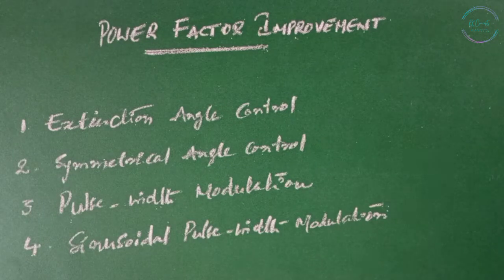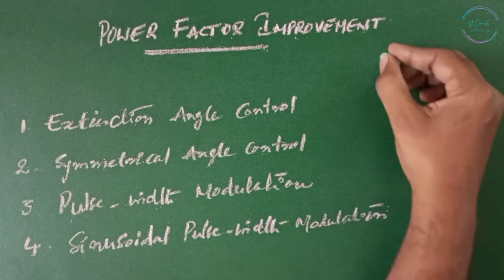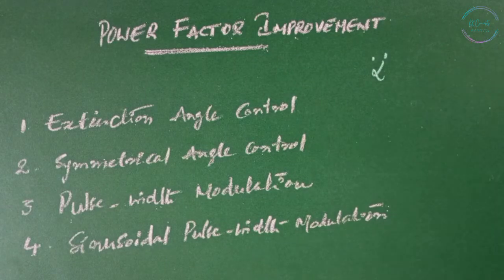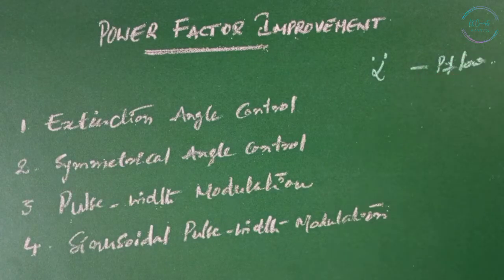The power factor of phase controlled converters, that is AC to DC converters, depends on the firing angle alpha, which is also known as delay angle. Generally the power factor is low, especially at low output voltage ranges.